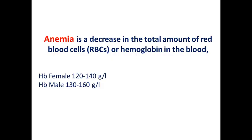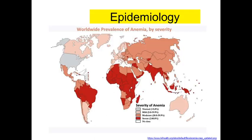Anemia is a decrease in the total amount of red blood cells or hemoglobin in the blood. Normal hemoglobin level for females is 120 to 140 gram per liter, for males is 130 to 160 gram per liter. Anemia is a highly prevalent disorder and here you can see anemia covers all countries of our world, including countries with severe anemia.